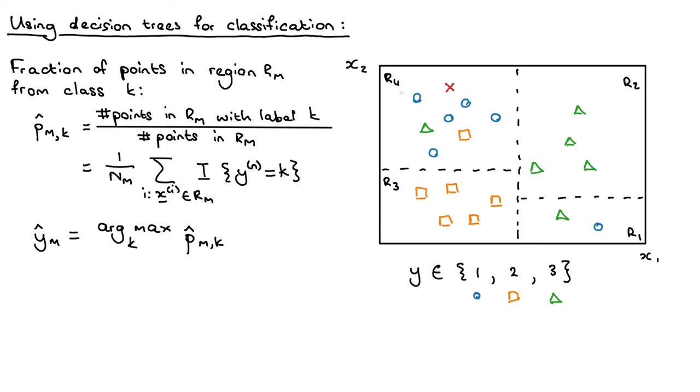So if we're looking, for example, at region 4 here, then for each of the 1, 2, 3 classes, we calculate the fraction of points in that region which was assigned to that class. So in this region, let's just quickly remove the test point.